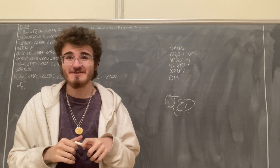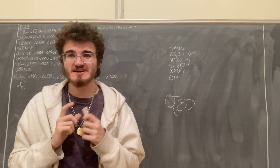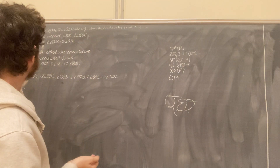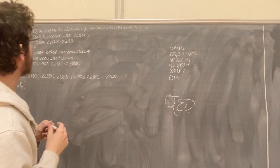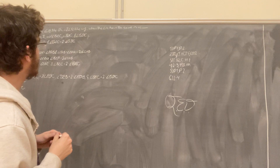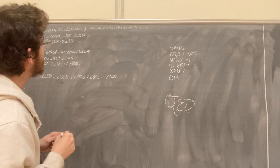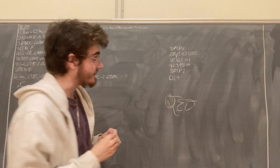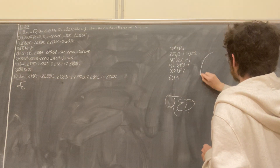Hello! This will be a demonstration of Proposition 20 from Book 3 of Euclid's Elements, which states that in a circle, the angle at the center equals double the angle at the circumference when the angles have the same arc as their base. What this would look like is we have some circle A, B, C, D.